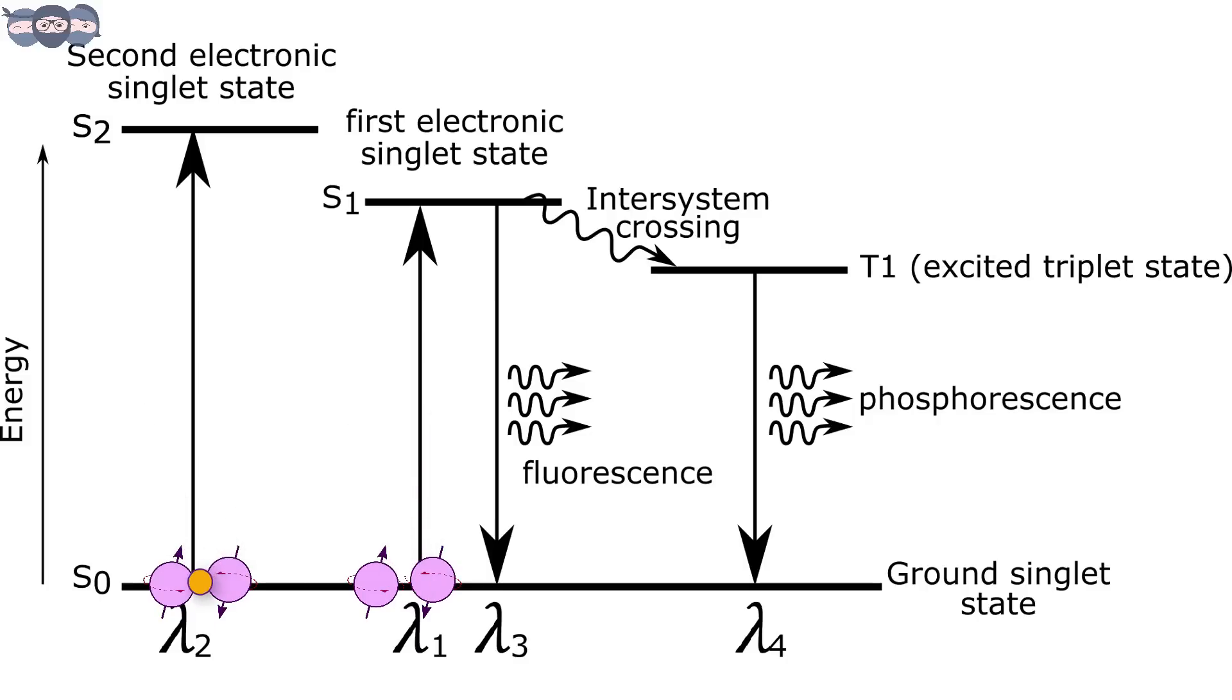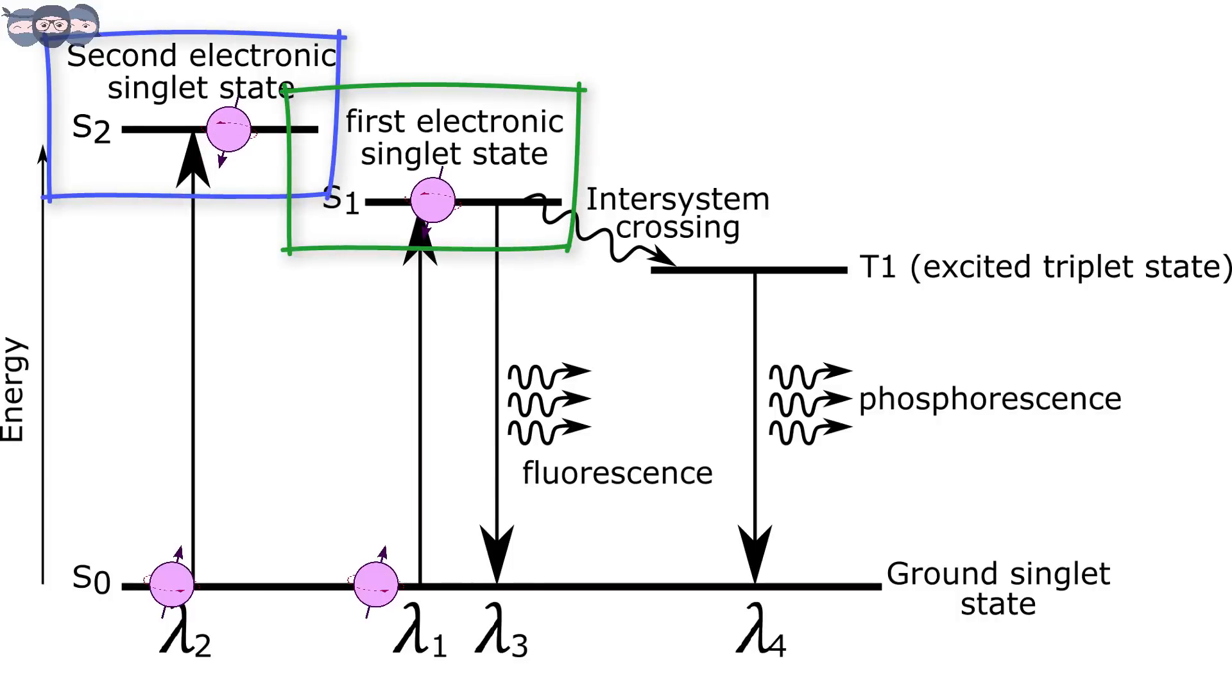Molecules transition to higher electronic states like second electronic singlet state or first electronic singlet state as depicted in the diagram.